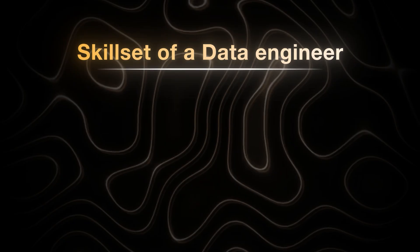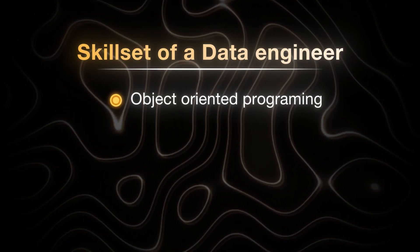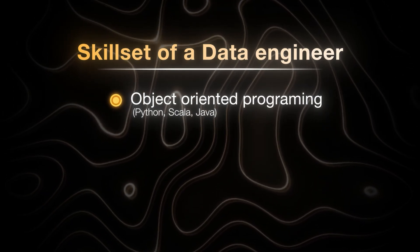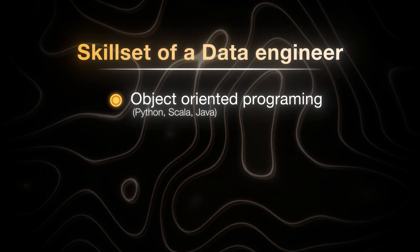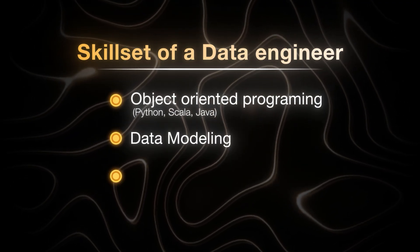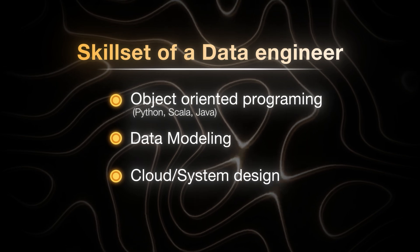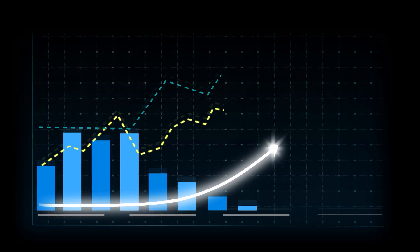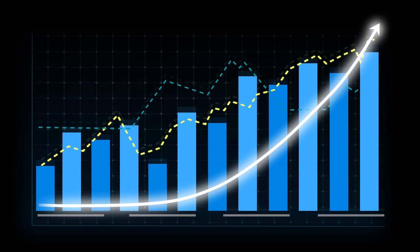As a data engineer, you really do need to know an object-oriented programming language — that could be Python, Scala, or Java. You definitely need to know data modeling, and you also need to know cloud and system design. It's really taking the skills a data analyst has and scaling them, because once you start working with cloud and big data, you can't do things in Excel or just put it in a dashboard. A data engineer needs to do things at scale with a ton of data.